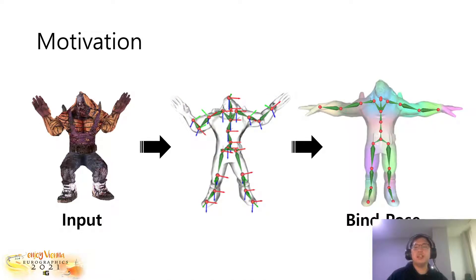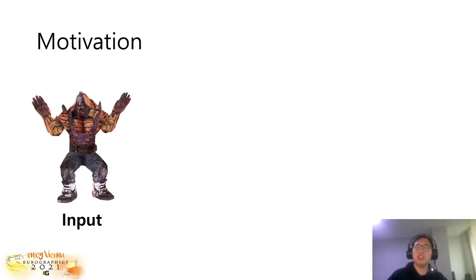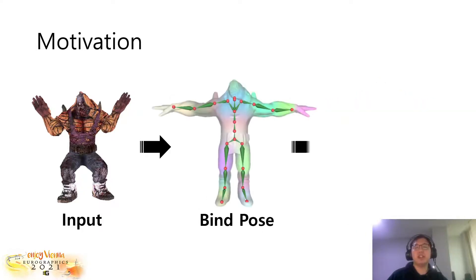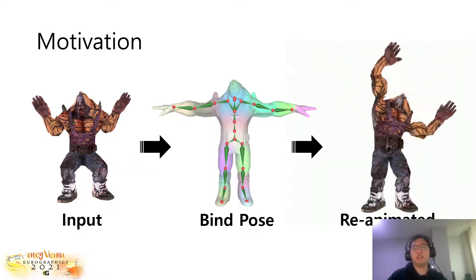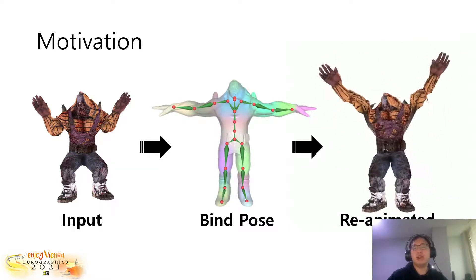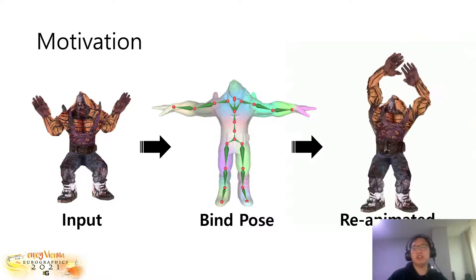In order to animate the character using automatic methods such as motion retargeting, we also need our character to be at their bind pose such as T-pose or A-pose. As a result, we have to figure out how much the joints are rotated. Using this approach, we will be able to read the input character and transform it back to its bind pose. Combining this with motion retargeting techniques, we will be able to animate the 3D character in arbitrary poses in a fully automated way.